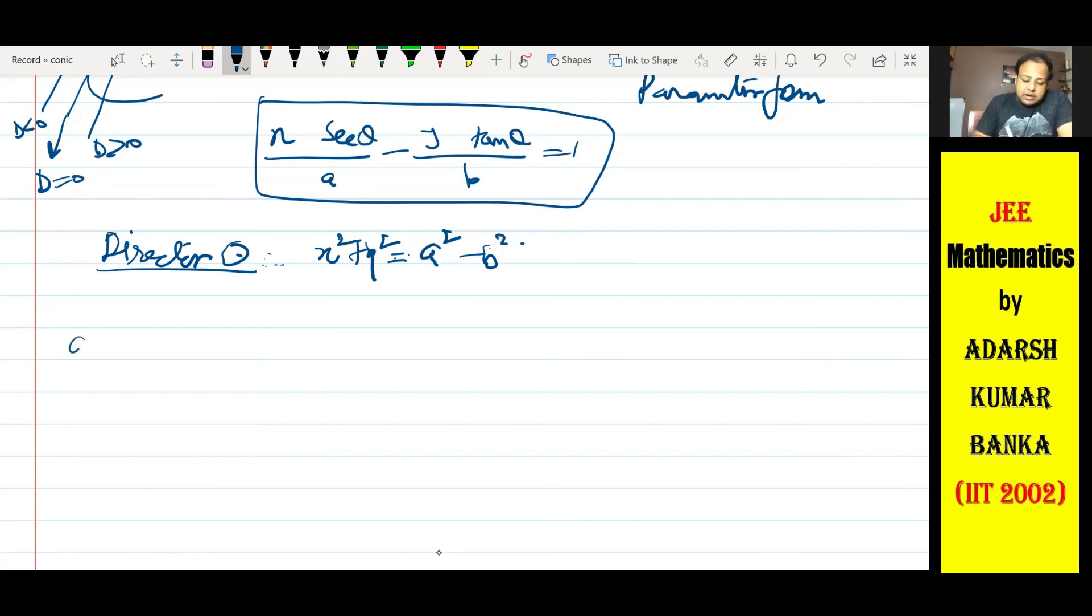Now I have a point - bhai agar a greater than b hua to koi problem nahi hai. Lekin agar a less than b ho gaya to kya hoga? Then what will happen? Some of you say sir b square minus a square kar de. Some of you say sir uska mod le lenge. Lekin aisa kuch nahi hai. Agar a square minus b square aya, to yeh second wale case mein a square minus b square will be negative. And we know that x square plus y square ka value negative to nahi ho sakta. Aur isliye aisa koi director circle banega hi nahi. There will be no director circle if a is less than b. This is true for all the cases.